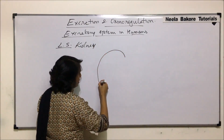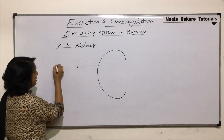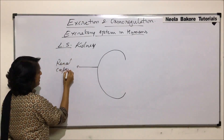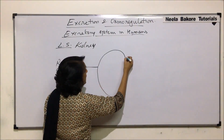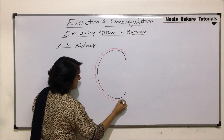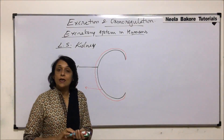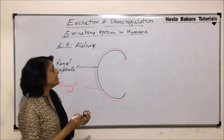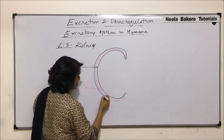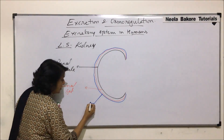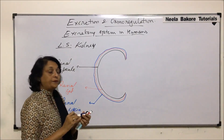We are drawing the outer layer, that is the capsule, and this capsule is the fibrous capsule — it is known as the renal capsule. Outside this there is a fat layer, which is known as the renal fat layer. And the outermost is again a fibrous tissue which is known as renal fascia. So we have seen all these structures, and the outermost is renal fascia.